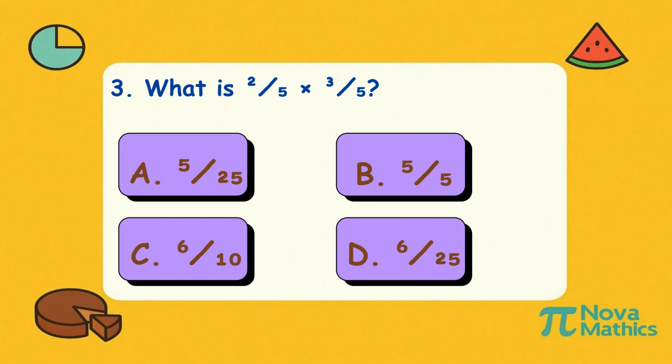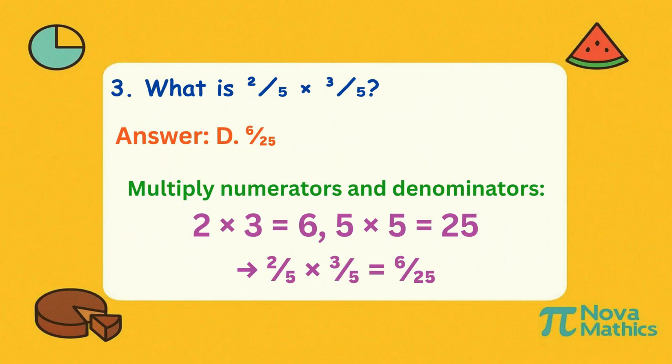Three. What is two-fifths times three-fifths? Multiply the top numbers: two times three is six. Multiply the bottom numbers: five times five is twenty-five. So the answer is six-over-twenty-five.